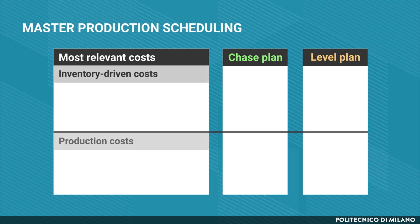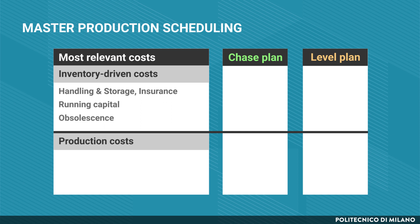Stock holding costs include all cost items connected to the physical handling and storage of items, as well as insurance costs, running capital costs, opportunity costs concerning the financial burden of inventories, and obsolescence costs — because any time you build inventories, you risk having them unsold at the end of the planning period. As for production costs, we have to consider setup costs or inefficiencies due to changeover, retuning machines, as well as resource productivity and availability, since the more you stress resources, the less productive they will perform.